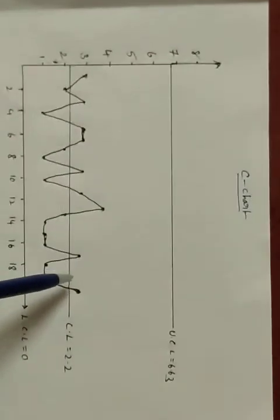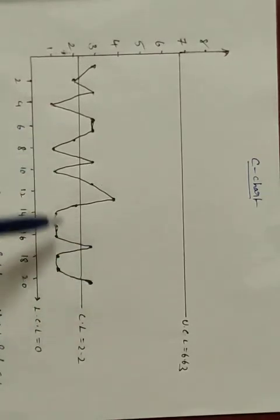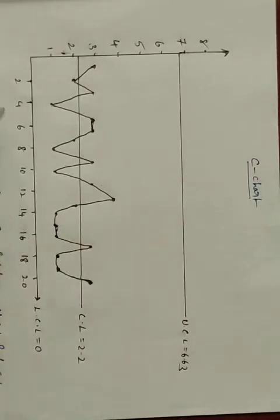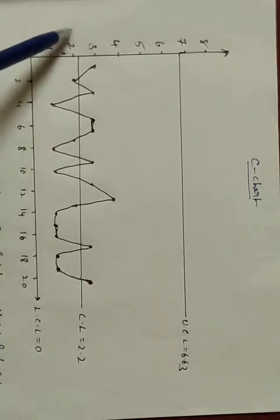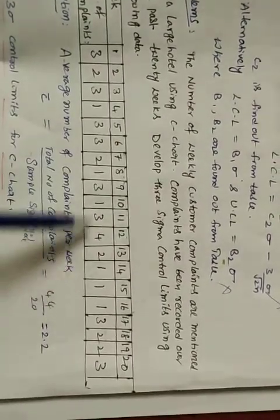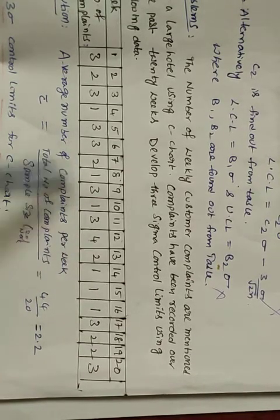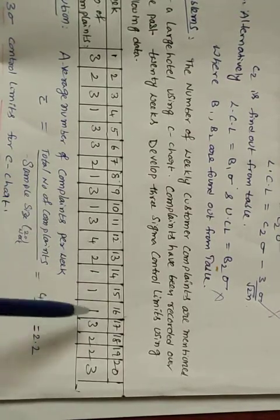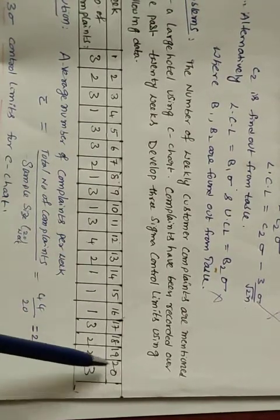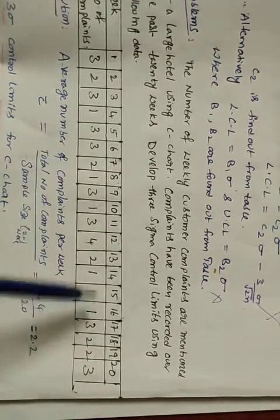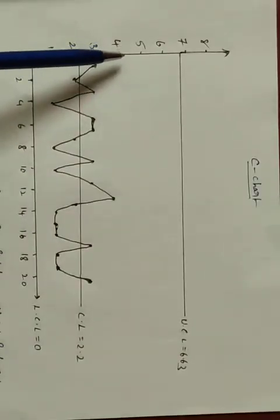Now we draw the C chart. Using this problem, we first draw the center line (CL). The X-axis represents the sample number and the Y-axis represents the number of complaints. The highest value in the data is 4, so the Y-axis is plotted up to 5 or 6. The X-axis covers 20 weeks.